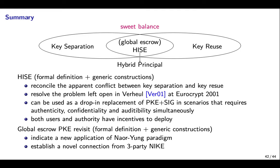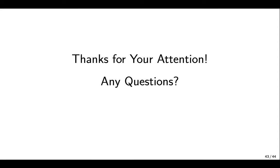In summary, we put forward a new notion called HISE with formal definition and generic constructions. Our notion strikes a sweet balance and reconciles the apparent conflict between key separation and key reuse, resolving an open problem left open since Eurocrypt 2011. It can be used as a drop-in replacement of PKE plus Signature in scenarios that require authenticity, confidentiality, and auditability simultaneously, and both users and authorities have incentives to deploy it. We also extensively revisited global escrow PKE. Our result indicates a new application of the celebrated Naor-Yung paradigm and establishes a novel connection from three-party NIKE. Thanks for your attention.